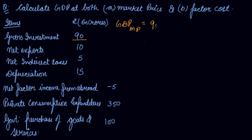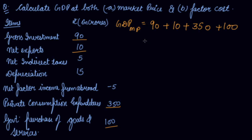Gross investment is 90, net exports are 10, private consumption expenditure is 350, and government expenditure is 100. Adding these together: 90 + 10 + 350 + 100 = rupees 550 crore as GDP at MP.